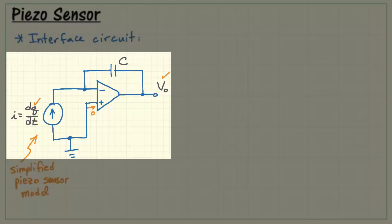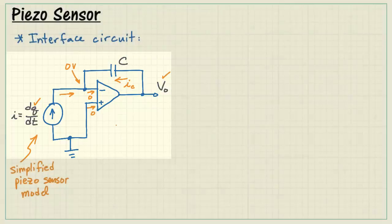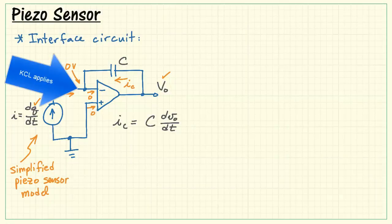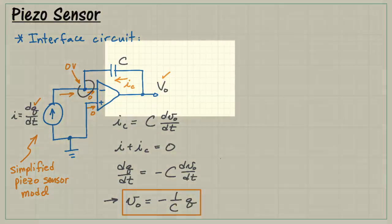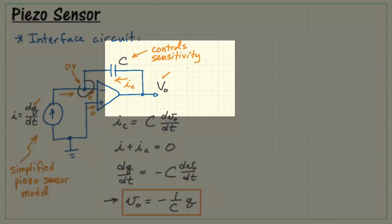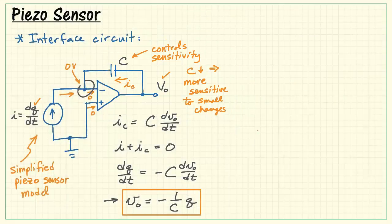To get a better understanding of how the charge amplifier works, if this was an ideal op-amp, we'd have zero current entering each of its terminals, and then with negative feedback in place, we would have zero volts on this terminal as well. I'm going to relate this current from the current source and the current through the capacitor. Call that IC. IC is the capacitance times the time rate of change of the output voltage. KCL applies at the inverting terminal, and we write I plus IC equals zero. Substituting in the values that we already know and integrating both sides, we find that the output voltage is minus 1 over C times the charge Q. The capacitance controls the sensitivity of the charge amplifier. A smaller capacitor means that we are more sensitive to small changes.